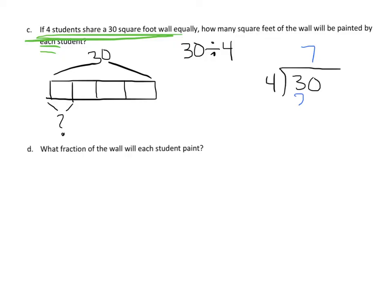So 4 goes into 30 seven times. That's 7 times 4 is 28 with 2 left over. So that's 7 and 2/4. And that's the same thing as 7 and a half. So each student will paint 7 and one half square feet of wall.